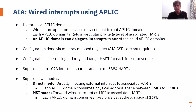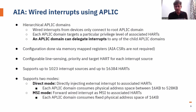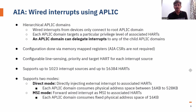Complete configuration of an APLIC domain is done through memory-mapped registers. We also have configurable line sensing, priority, and target hart for each interrupt source. One APLIC domain can support up to 1023 interrupt sources and can target up to 16384 harts. The most notable thing about APLIC is that we have two operating modes: direct mode and MSI mode. In direct mode, APLIC directly injects interrupts to the harts. In MSI mode, the interrupts are forwarded as MSIs — APLIC takes wired interrupts and converts them into MSI writes targeting some of the harts. In direct mode, each APLIC domain consumes 16KB to around 528KB of physical address space, while in MSI mode it consumes a flat 16KB.